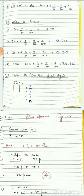Place values of all digits: for the number 56.03 — 3 is at the hundredths place, which means 3 upon 100. 0 is at the tenths place, which means 0 upon 10. 6 is at the ones place, and 5 is at the tens place, meaning 50.